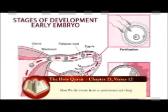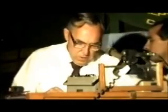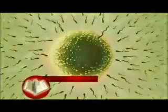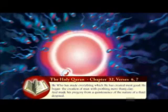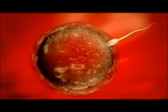This surah says: 'Then he made his progeny from a quintessence of the nature of fluid despised.' Sulala is an Arabic term that refers to the gentle extraction of the germ or sex cells from the millions that are produced. There are 300 to 500 million sperms in the ejaculate of a healthy young male. Only one of these is extracted from the semen to fertilize the ovum. Similarly, only one ovum reaches maturity and is expelled from the ovary, extracted from the many thousands available — again, the idea of extraction, or Sulala.